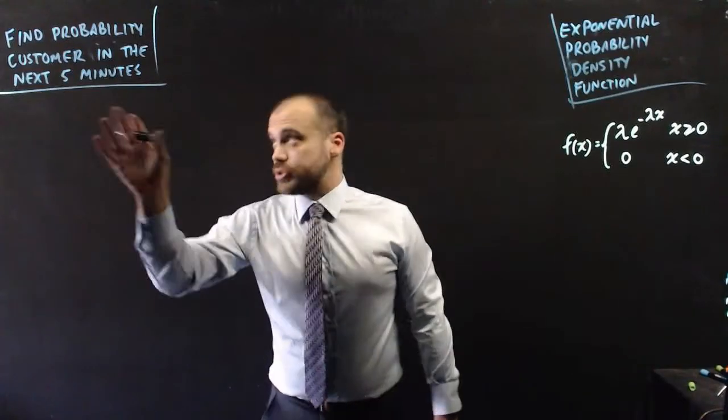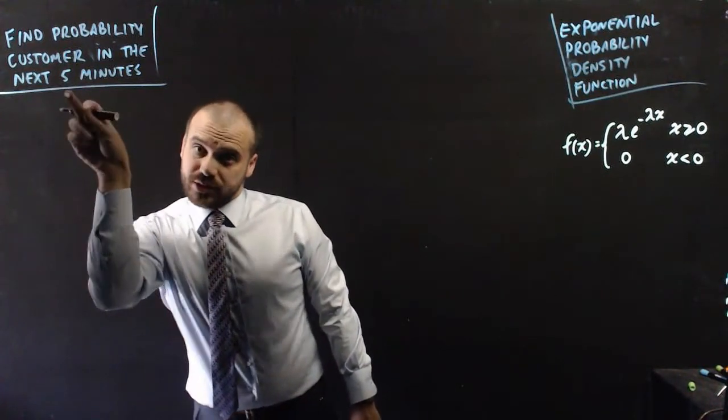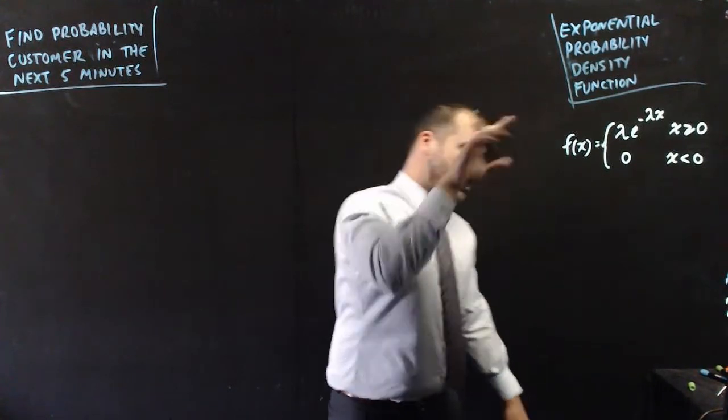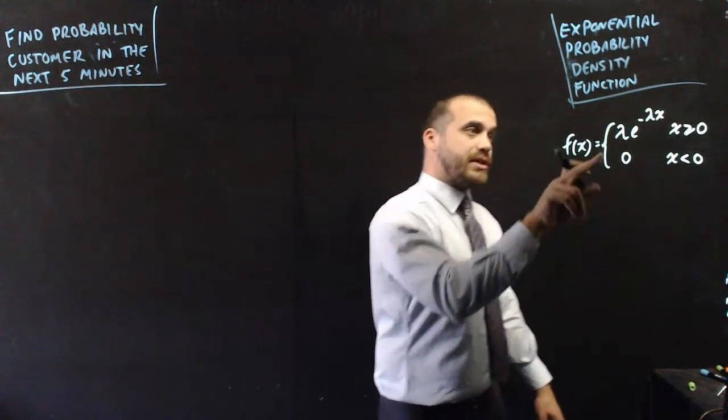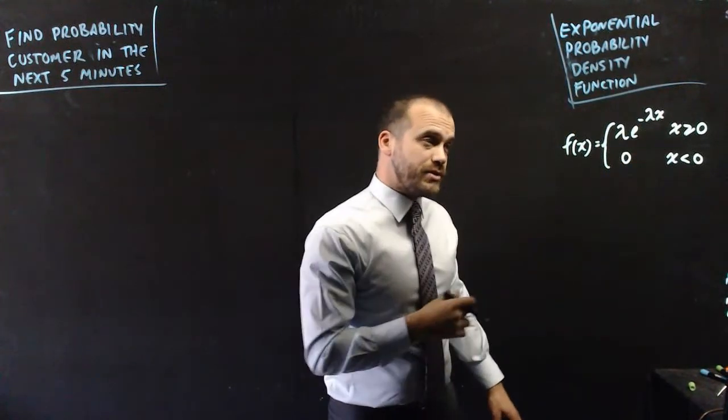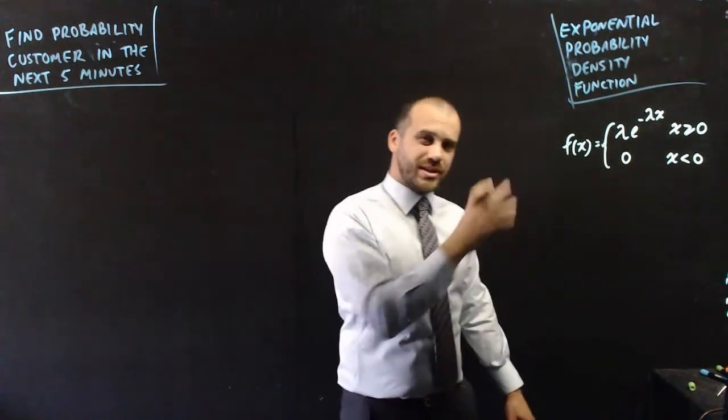So those two workers want to know the probability that a customer comes in in the next five minutes, and to do that, they're going to need an exponential probability density function, which looks like this. f of x equals lambda e negative lambda x, where x is greater than or equal to zero, and zero otherwise, a classic PDF.